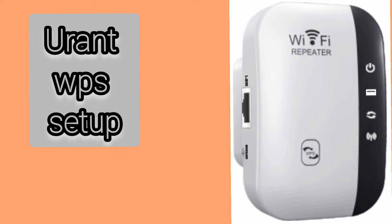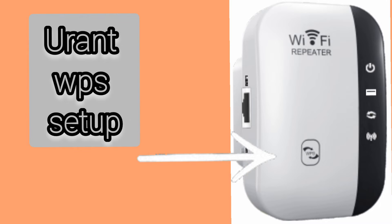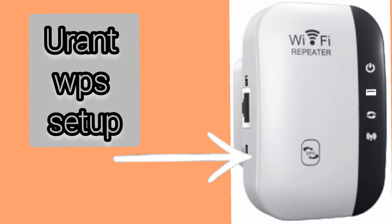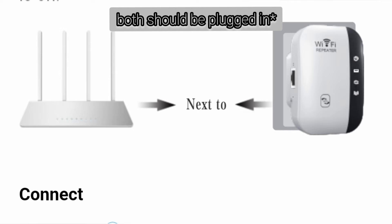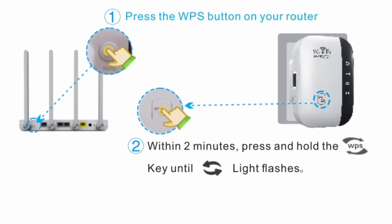The next method to set up the Urent Wi-Fi extender is via WPS. In this method, place the extender in the same room as your router, press the WPS button on the router, and within 2 minutes press the WPS button on the extender.